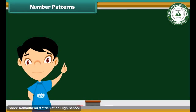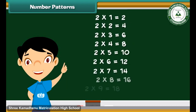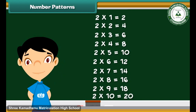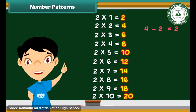Let us now make some patterns using numbers. We start with the table of 2. Look at the series: 2, 4, 6, 8, 10, 12, 14, 16, 18, 20. These numbers are arranged in a way that the difference between two consecutive numbers is always 2.